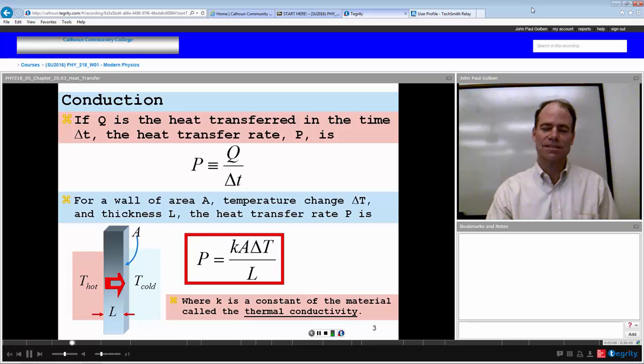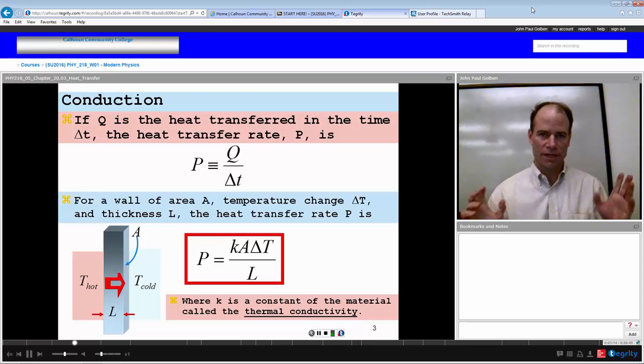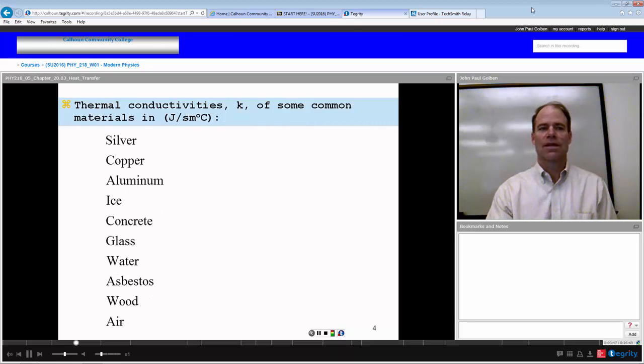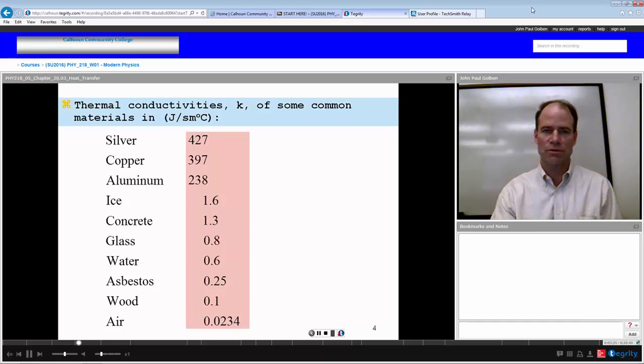Where K is a constant of the material, otherwise known as the thermal conductivity of that material, and would be an intrinsic property of the material itself. Here are some common thermal conductivities of some common materials in joules per second per meter per degree Celsius.